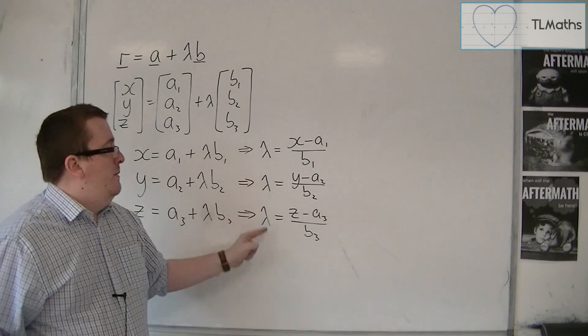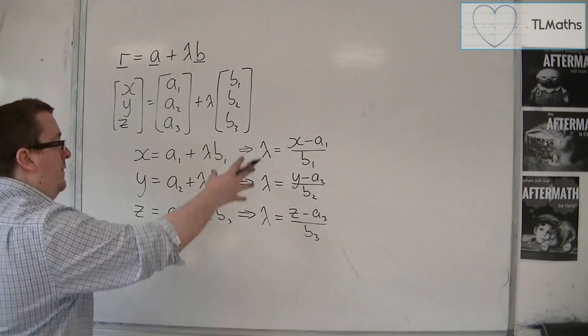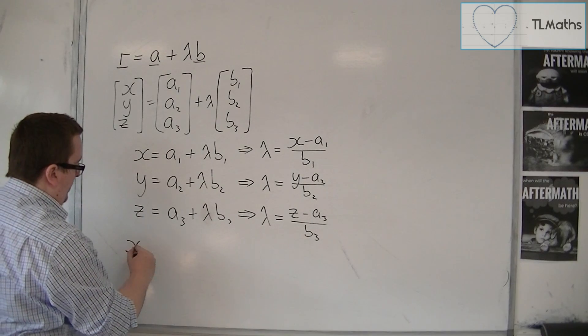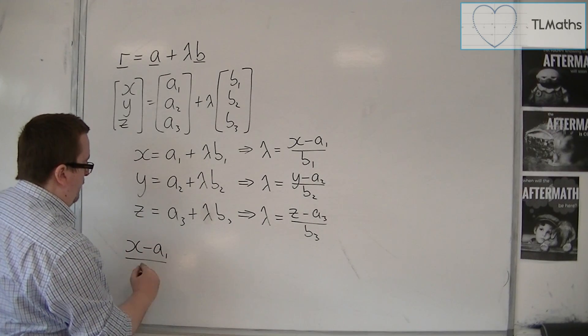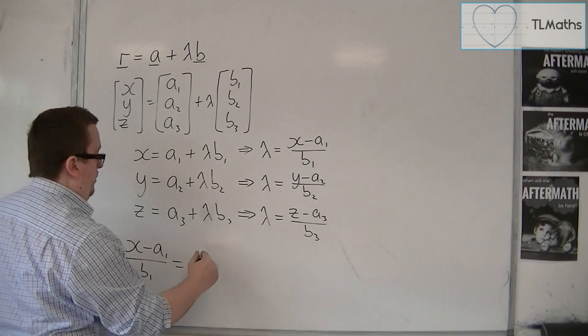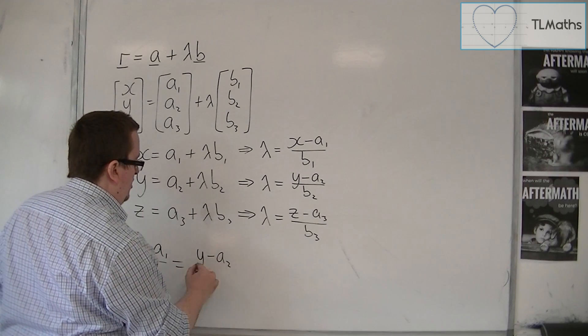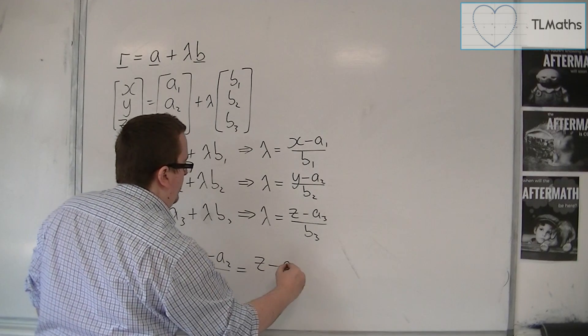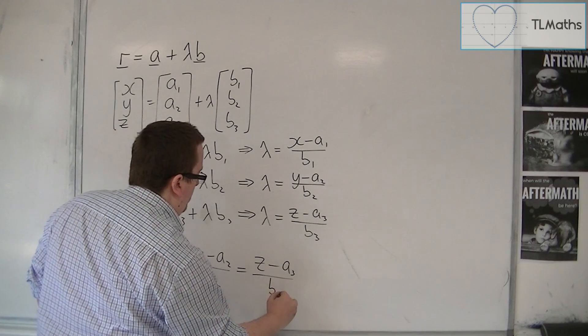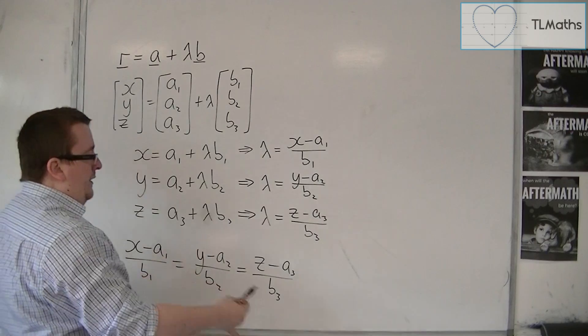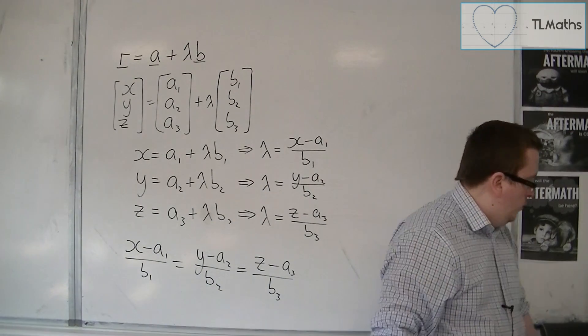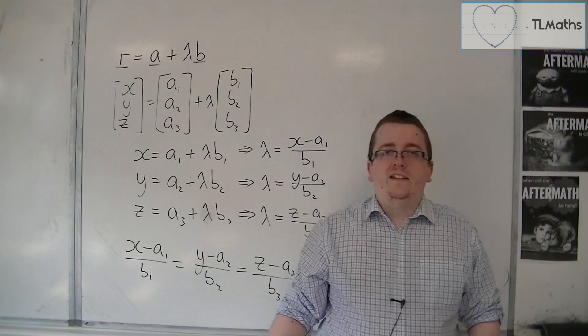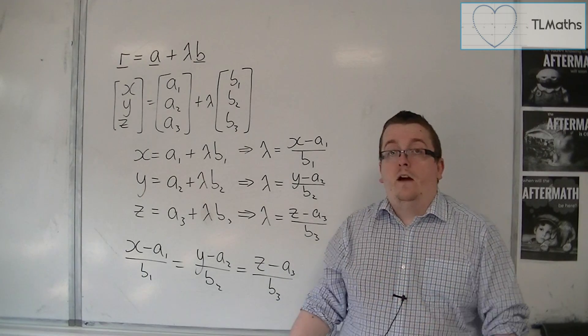And so if all the lambdas have to be the same, then all three of these bits have to be the same. So x minus a1 over b1 must be equal to y minus a2 over b2, and that must be equal to z minus a3 over b3. And this is the Cartesian equation of a three-dimensional straight line.